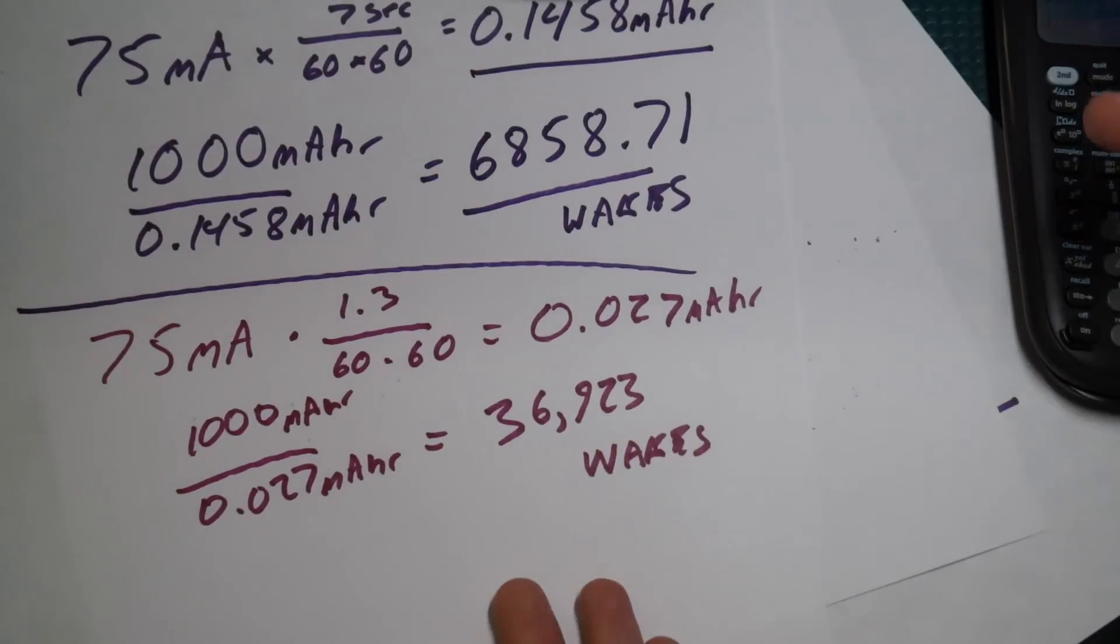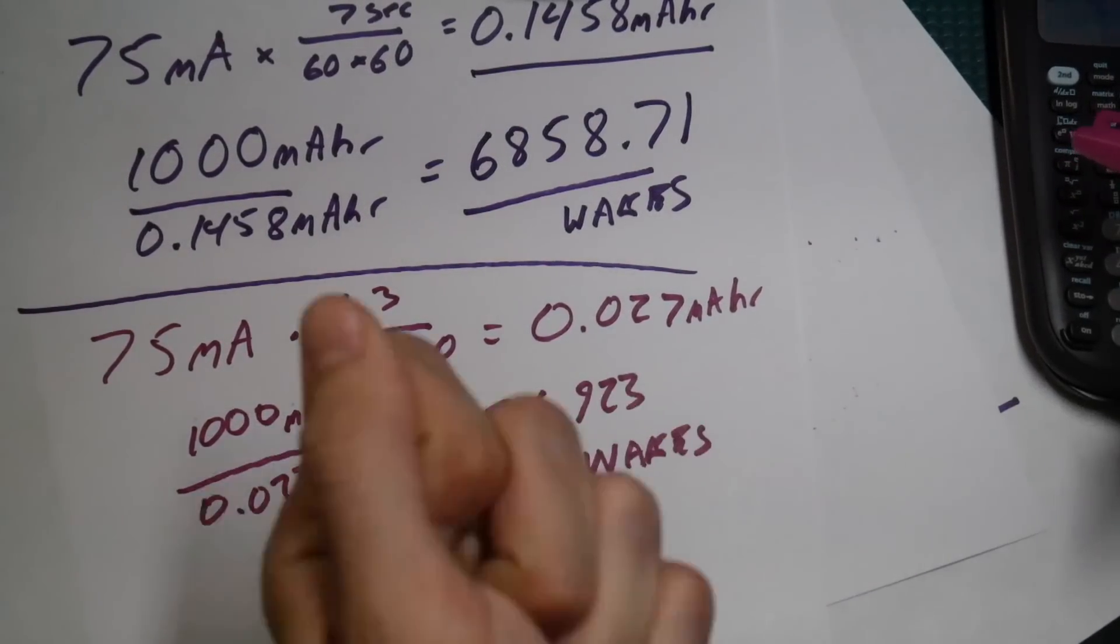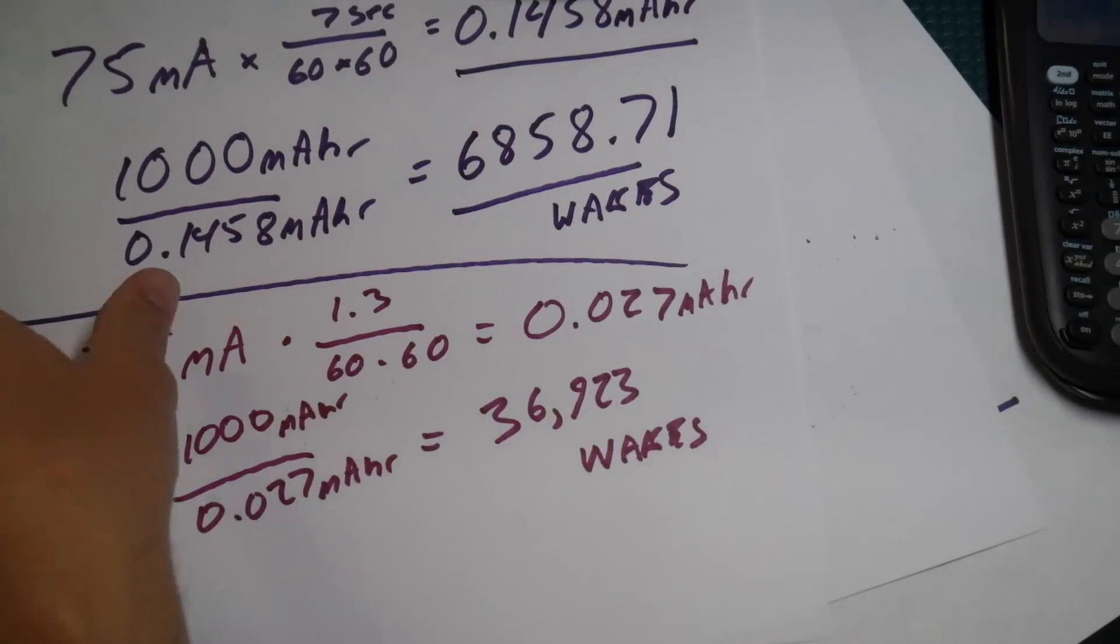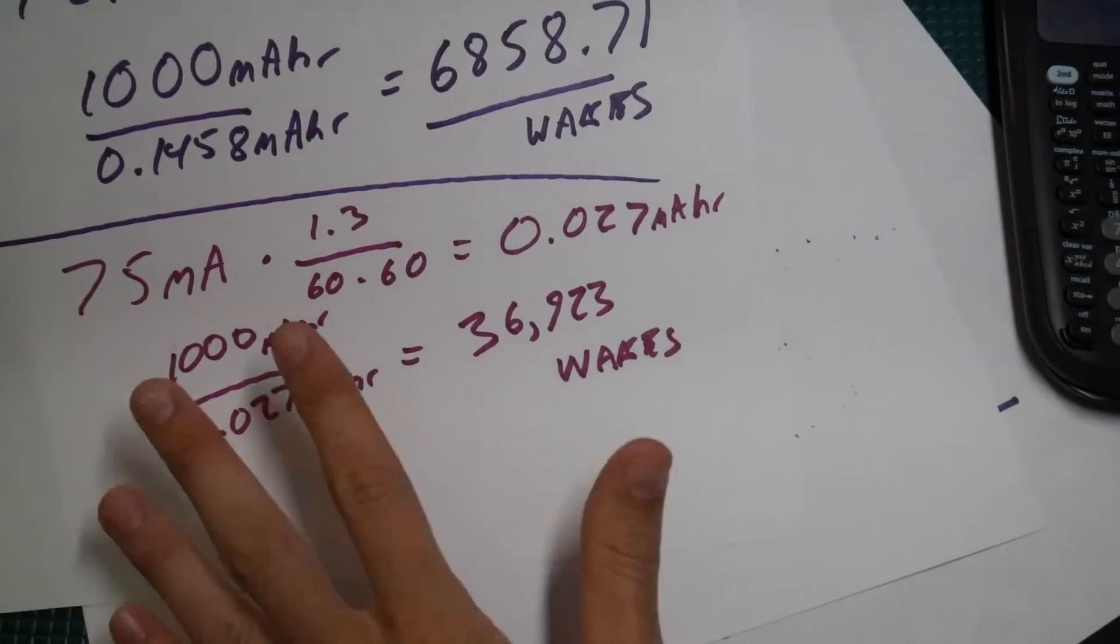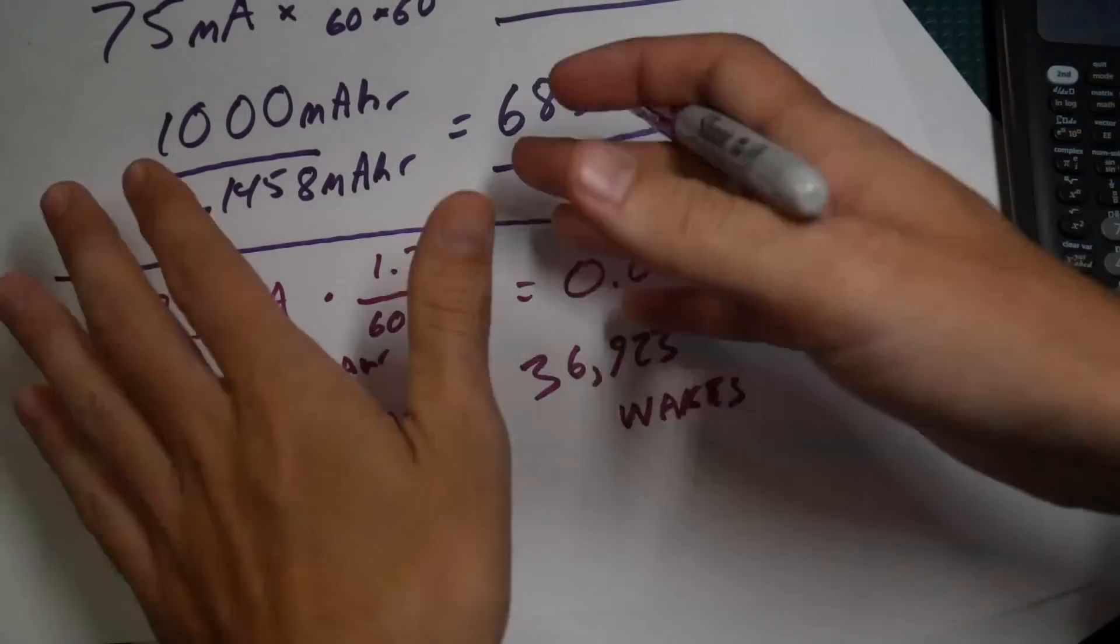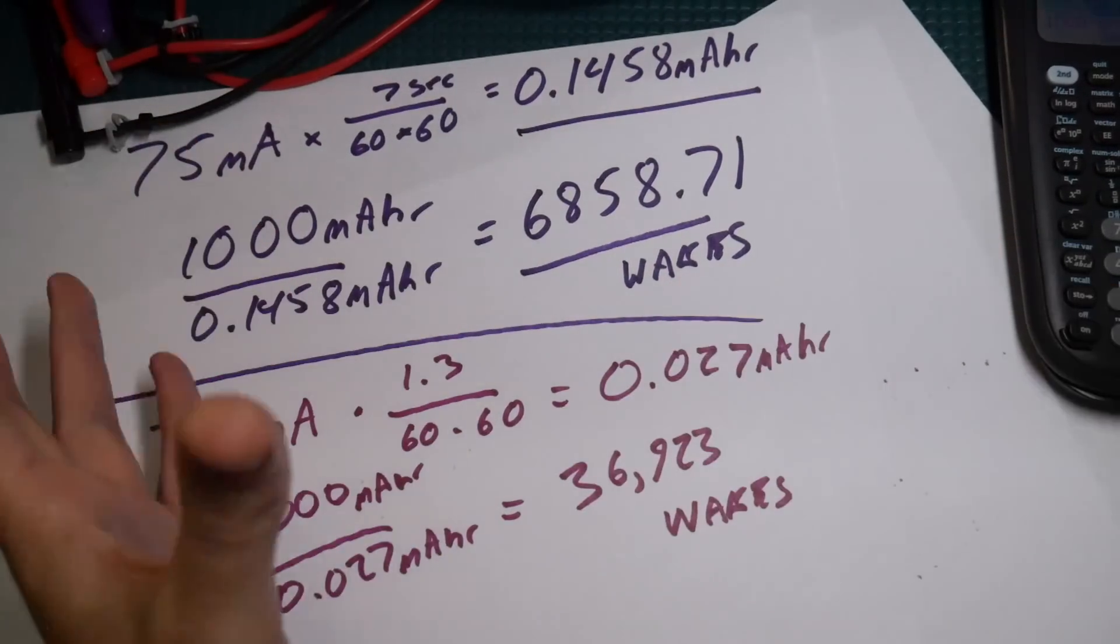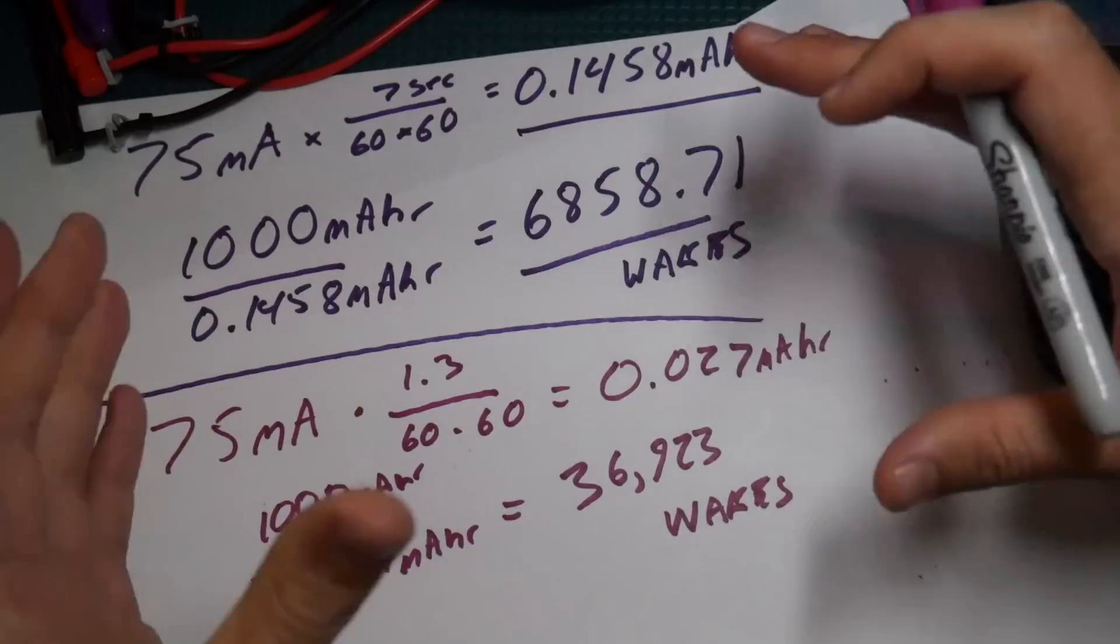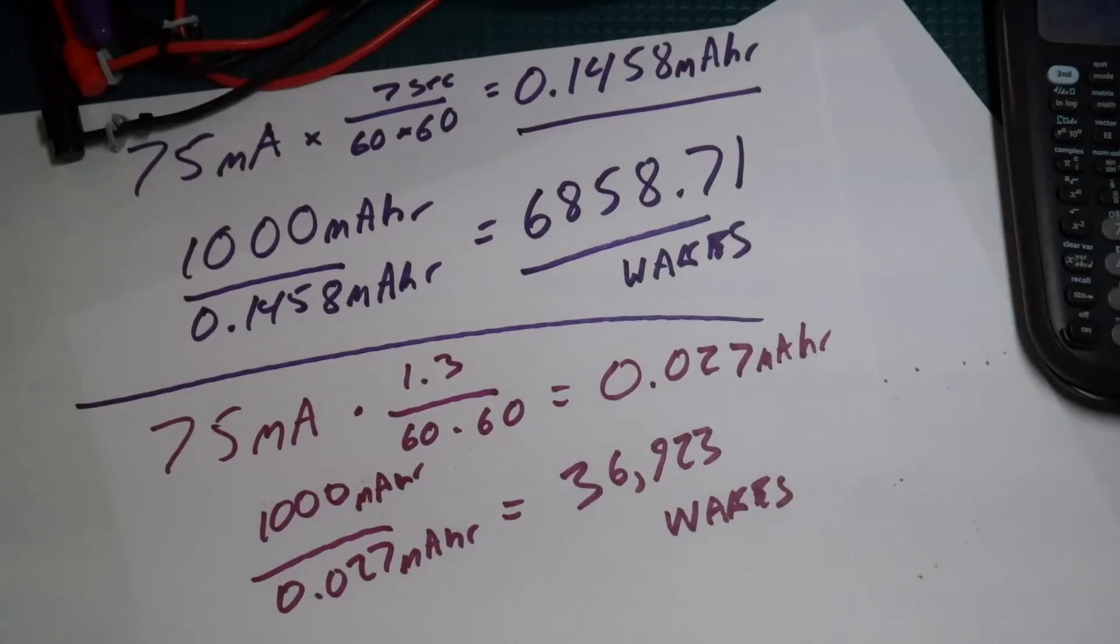This is of course all theoretical, the battery will self discharge before you get anywhere close to this. Unless you have an application where it's waking up a lot and you're going to hit these wakes before it self discharges after a few years. I just wanted to throw all of this out there. I'm talking about the trig board and hopefully this doesn't come off like a total commercial for it, but a lot of this applies to other low power battery powered applications. So hopefully that helps, thanks for watching.